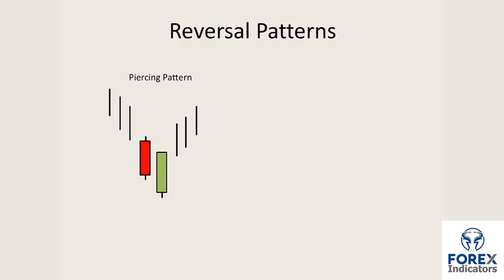The piercing pattern is where the signal candle tries to engulf the prior candle but doesn't quite succeed. The setup candle forms at the lower end of the market, the next candle then gaps down — the open is below the close of the previous candle — and buyers come in pushing up into the body of the previous candle. The rule of thumb here is that if that second, piercing candle moves more than 50% into the body of the prior candle, then we have a good piercing pattern.